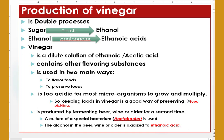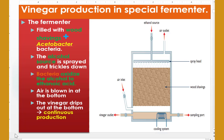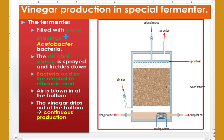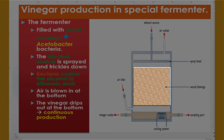Vinegar is produced by fermenting beer, wine, or cider for a second time. There is a special acetic acid bacteria that acts as an agent to oxidize or ferment ethanol alcohol to ethanoic acid. Here is how we can produce vinegar in special fermenters. First, we need to make special fermenters. These special fermenters, as shown on the right side, must be filled with wood shavings that contain acetobacter.